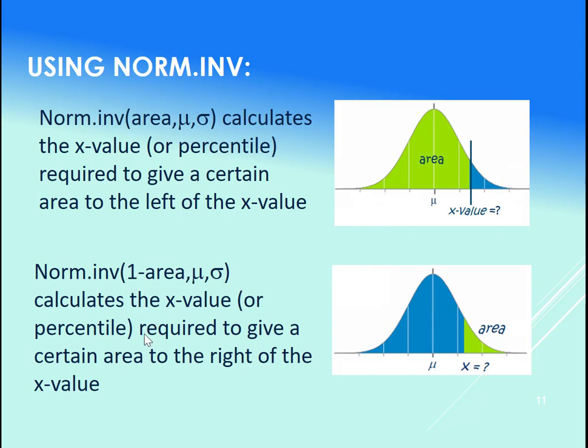And that again calculates the area in this case. So it calculates the x value such that this is the area to the right of it, or 1 minus that is the area to the left of it, if that makes any sense. So let's jump into an example here, example number 2.